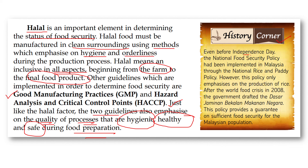Even before independence day, the national food security policy had been implemented in Malaysia through the national rice and paddy policy. However, this policy at that time only emphasized the production of rice. After the world food crisis in 2008, the government drafted the Dasar Jaminan Bekalan Makanan Negara, which provides a guarantee on sufficient food security for the population in Malaysia.